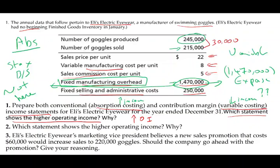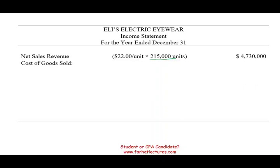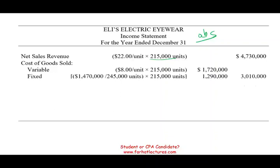Let's first look at the absorption costing income statement. Revenue is 215,000 units times $22, which equals $4,730,000. For cost of goods sold: variable manufacturing cost is $8 per unit times 215,000 units, which equals $1,720,000. Fixed manufacturing overhead: we take $1,470,000 divided by the 245,000 units produced.